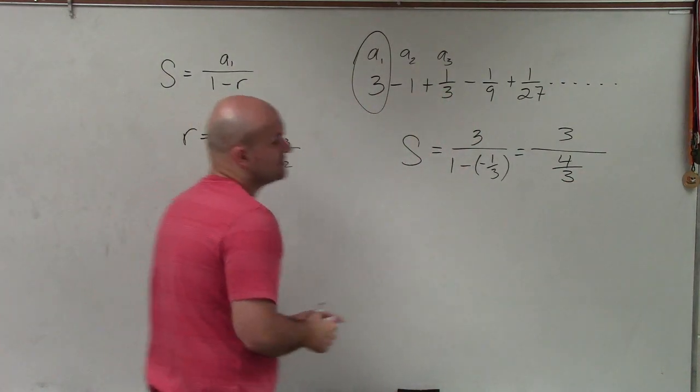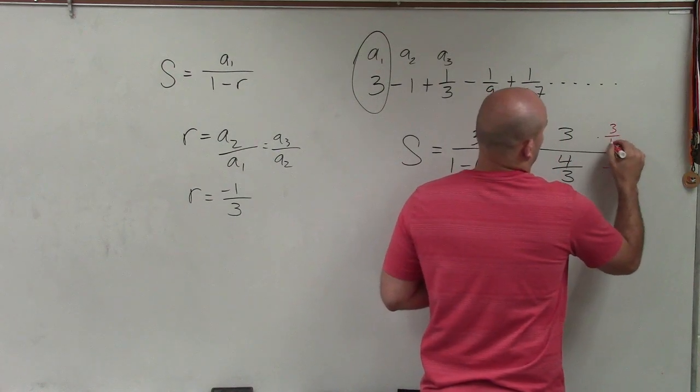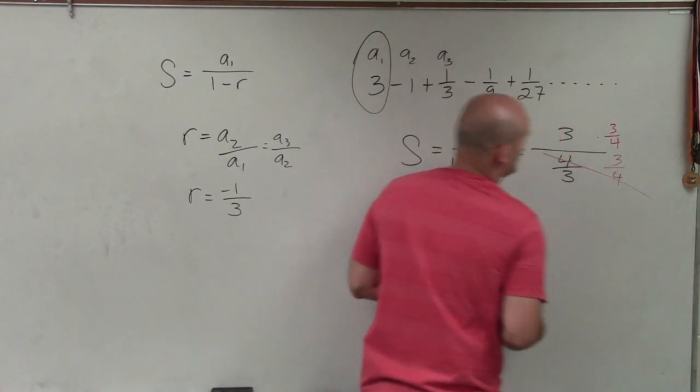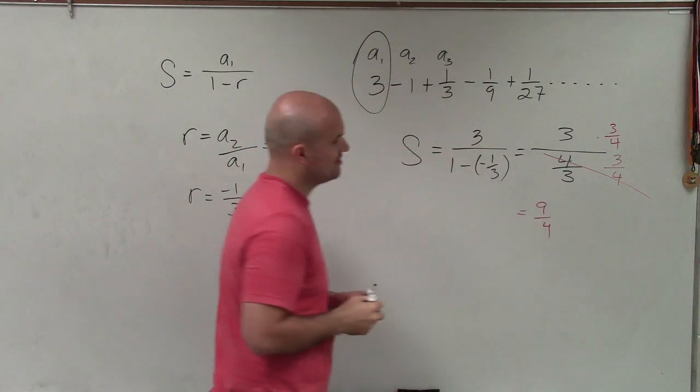Now to get our fraction off the denominator, I multiply by the reciprocal, that multiplies into 1, and I'm left with 9 fourths.